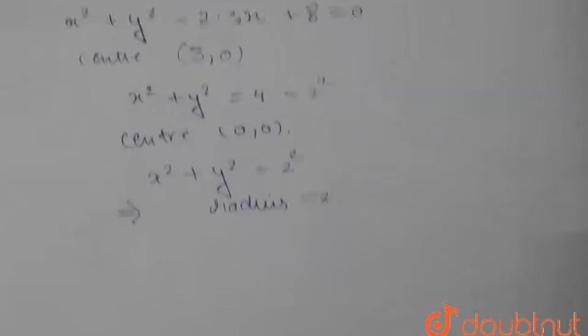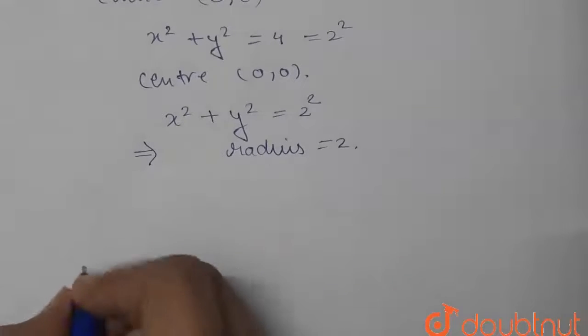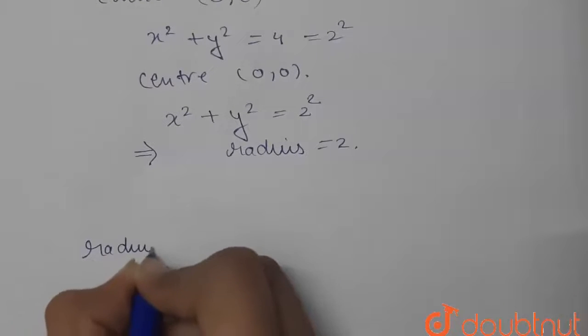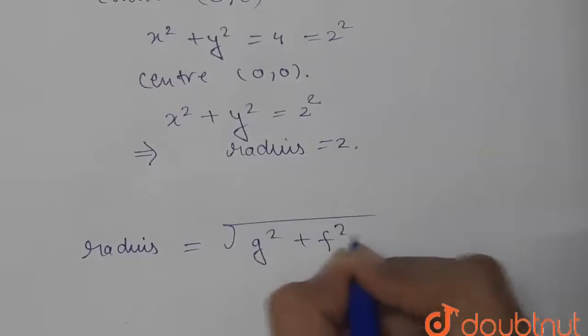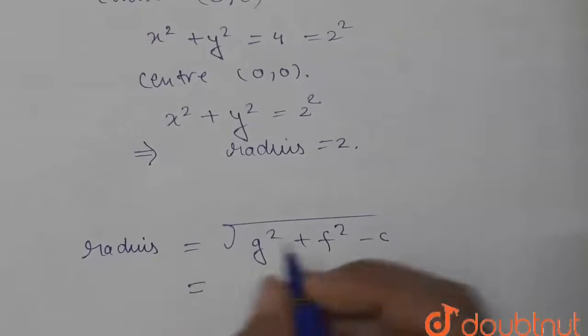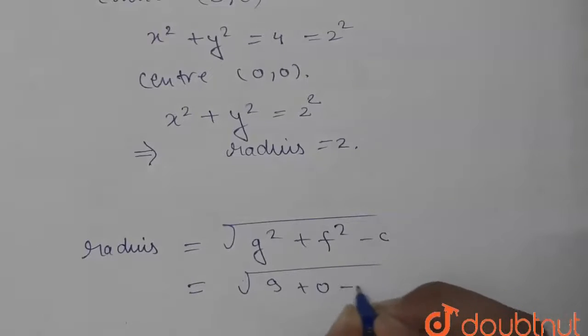Now see, if we find its radius, the formula for calculating radius is: radius is given by √(g² + f² - c). In the above equation, we are having this as 9 + 0, that is 9 + 0 - 8, that is √1, which is coming equal to 1.